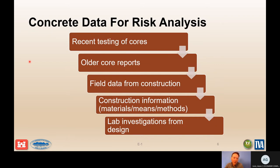Next you can start digging into any other data available for your structure. This is a hierarchy for obtaining data on material properties. At the top is recent testing of cores — this is the best source of evidence because it's the in-situ concrete at current age, cured and in its actual conditions, giving the best snapshot of what exists right now. If you don't have recent core testing, there may be core reports from the past — during instrument installation or previous investigations — but you need to account for the age of those cores relative to your structure.